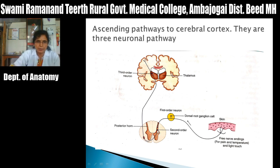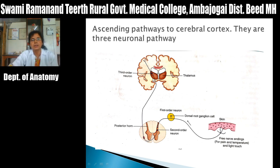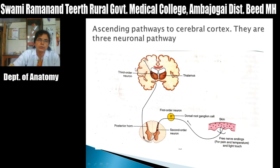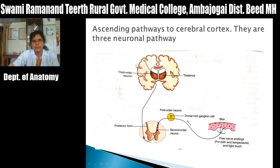Fibers arising from second order neurons cross to the opposite side and ascend upward through the spinal cord, medulla, pons, and midbrain as ascending tracts. They relay in the third order neuron situated in the thalamus. Fibers of this third order neuron pass through the posterior limb of the internal capsule and project to the primary sensory area — area 3,1,2 — in the post-central gyrus of the cerebral cortex.